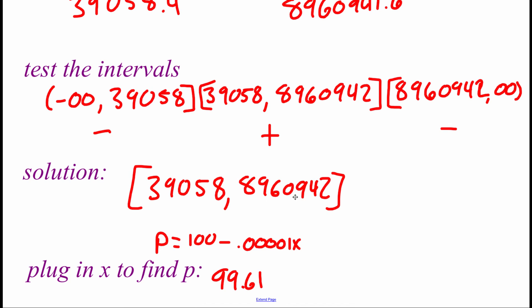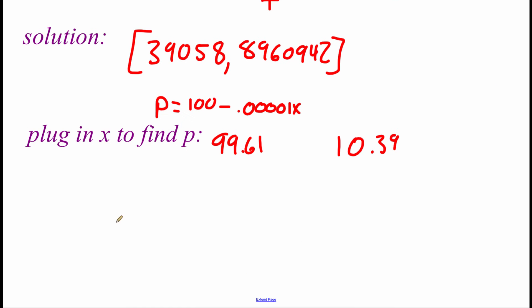And if we store key this 8 million number and plug it into this price equation, we end up with 10.39. So writing an interval for this, we want the price of our calculator to be somewhere between $10.39 and $99.61.